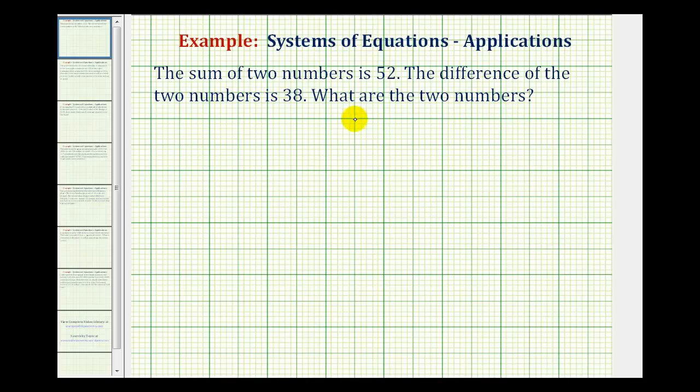So to solve this problem, we're going to set up a system of equations and then solve the system. The first thing to recognize here is we have two unknown numbers. So we'll start by assigning variables for each of the two numbers. We'll let x equal the first number, and we'll let y equal the second number.